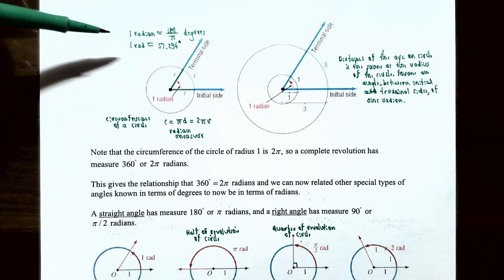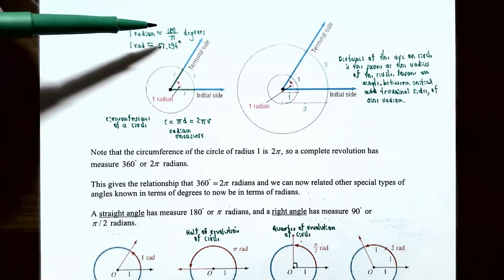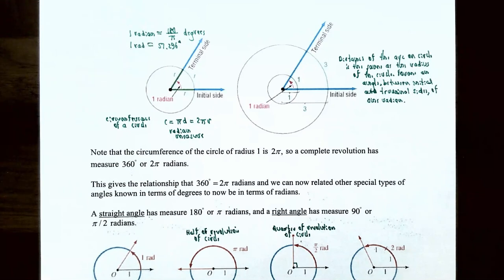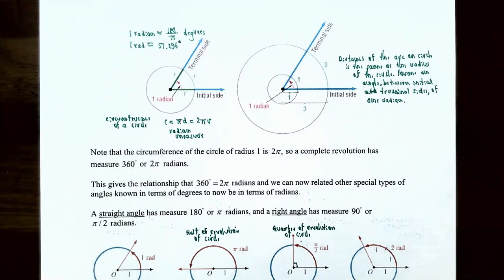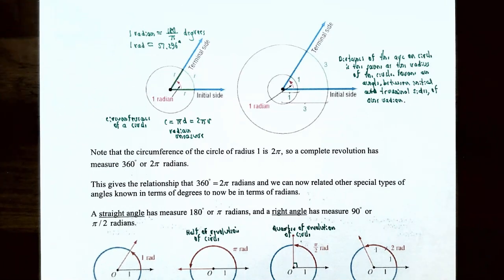One radian is equal to 180 divided by pi degrees. Or if you round 180 divided by pi, you come up with 57.296 degrees rounded to three decimal places. So one radian of measurement with an angle is equivalent to approximately 57.296 degrees.